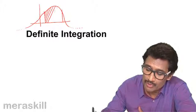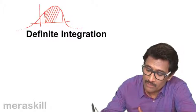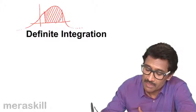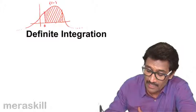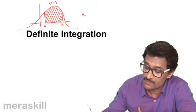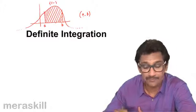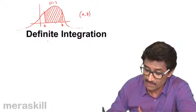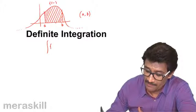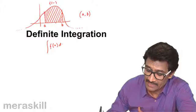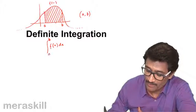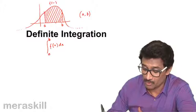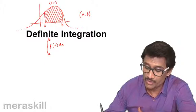So how do we do this? So suppose this particular function is denoted by f of x and a comma b is the domain. So we write this symbol this way: f of x dx from a to b. This is the upper limit. This is the lower limit. So b to a.